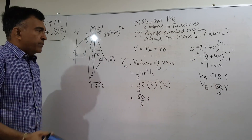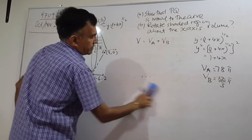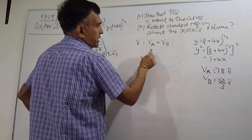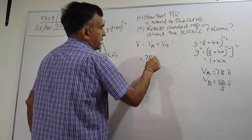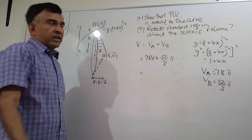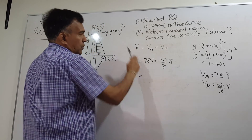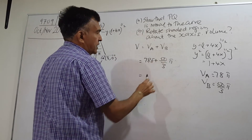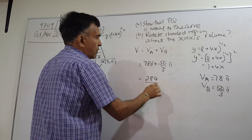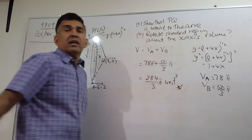Now to get the total volume generated: V equals VA plus VB equals 78π plus 50π/3. Converting: 78 times 3 is 234, plus 50 equals 284. So the total volume is 284π/3 cubic units. And we are done.